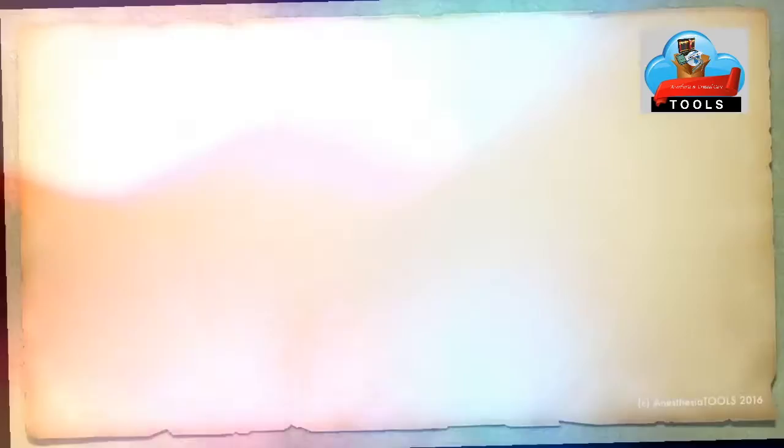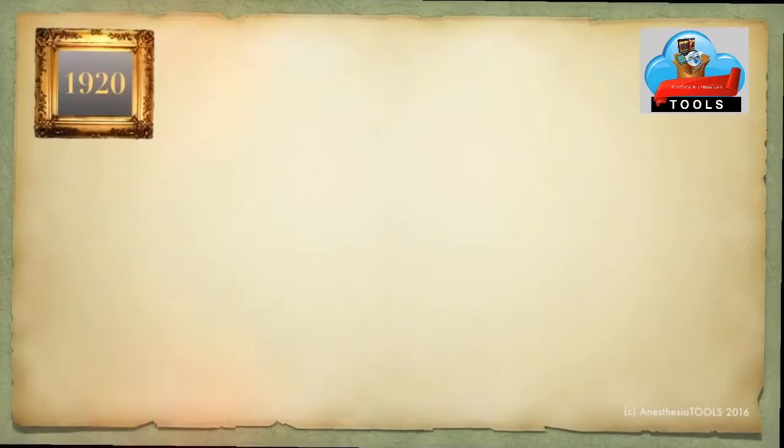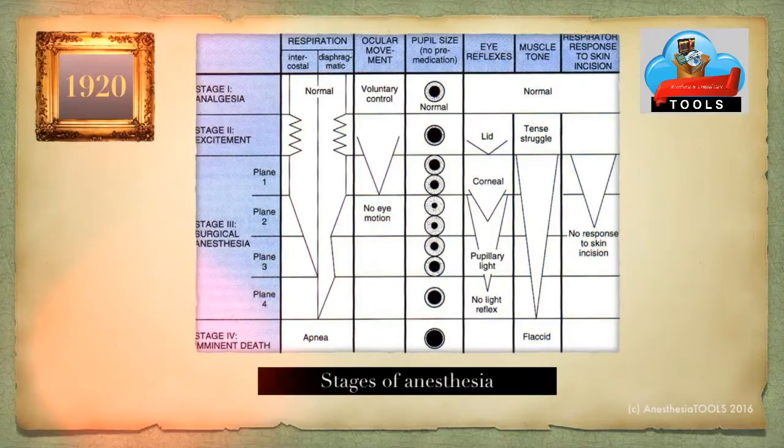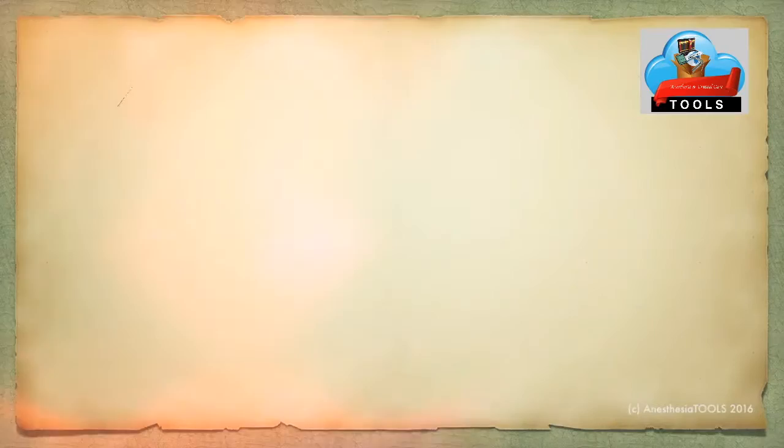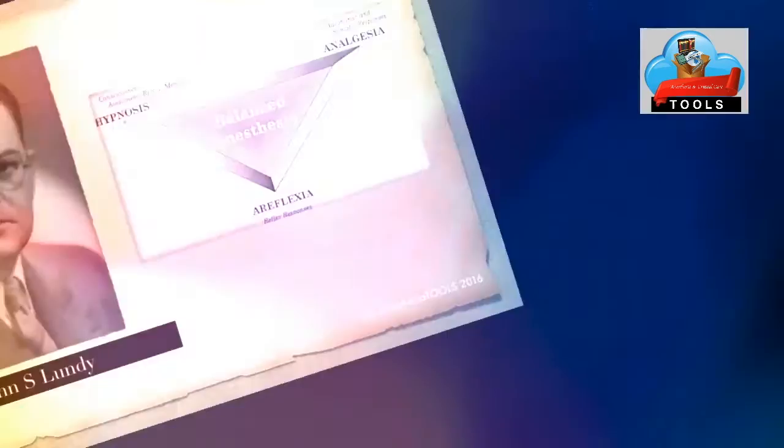This germinated into introduction of Boyle's machine by Edmund Boyle and Geoffrey Marshall in 1917. Three years later, Ivan McGill and Robotham developed the endotracheal anesthesia. The same year witnessed the classic paper on the science of anesthesia by Arthur Gadot. John Lundy developed the theory of balanced anesthesia as early as in 1925.